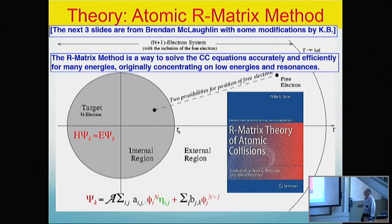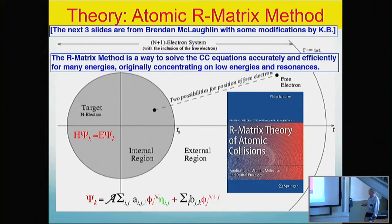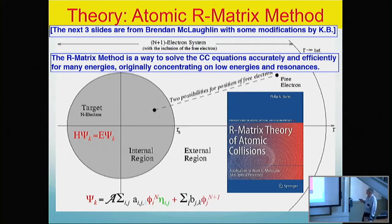I borrowed a couple of slides from Brandon McLaughlin. Essentially, the R-matrix method — if you want to know all about it, you can read this book written by Phil Burke, about 800 pages, sort of his final masterpiece in this area. At the end of the day, the R-matrix method in our sense is nothing else than one method to solve the close-coupling equation. This one is accurate and efficient for many energies; originally it was developed for low energies and resonances. There is this internal region and the external region, the famous radius A.